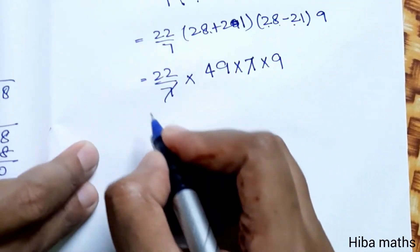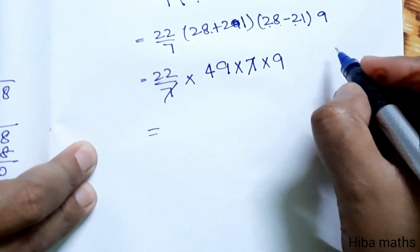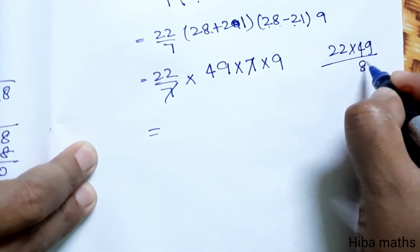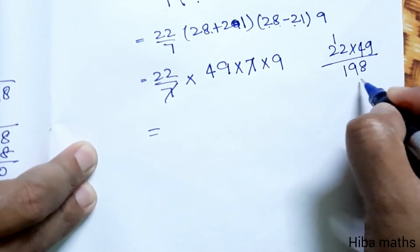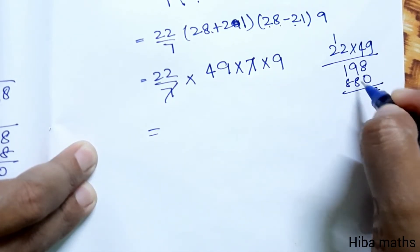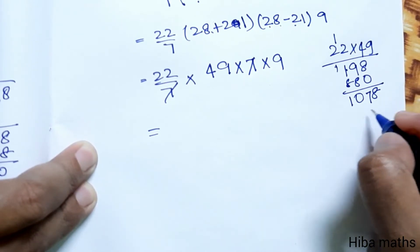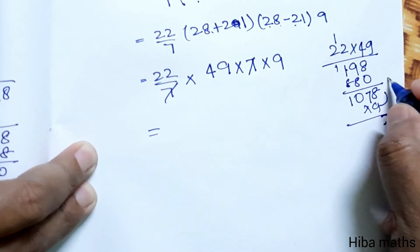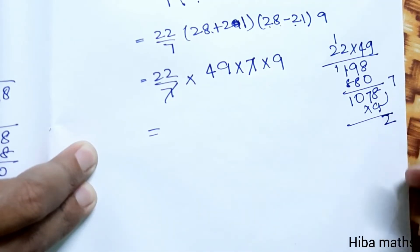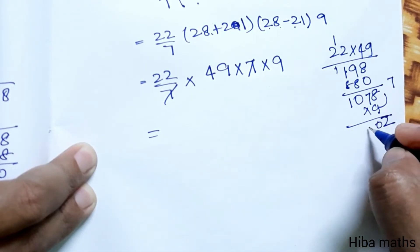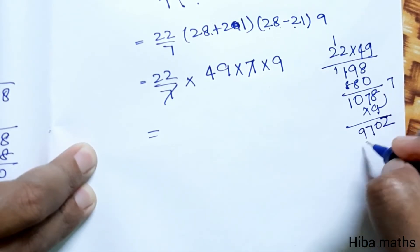Canceling the 7s, we multiply the remaining numbers: 22 times 49 times 9. Working through the multiplication step by step gives us 9702.